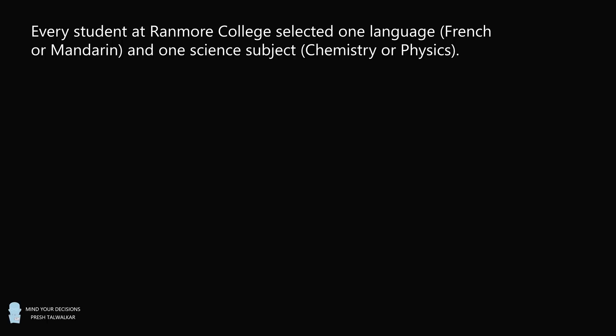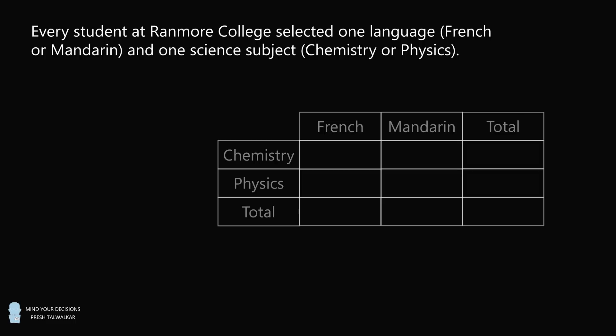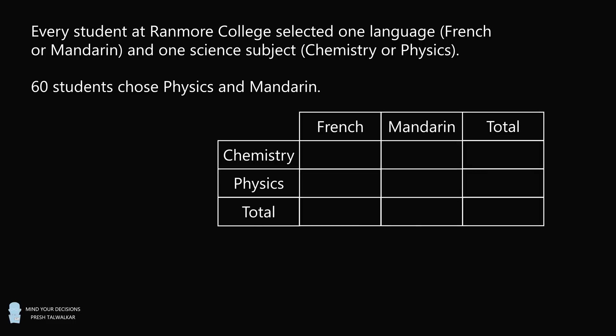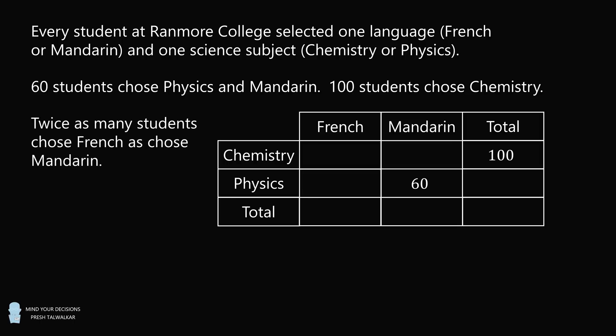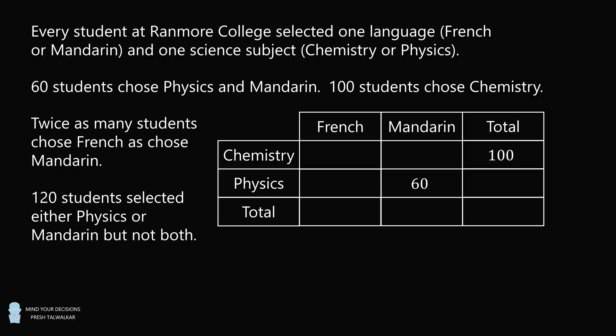Every student at Ranmore College selected one language, French or Mandarin, and one science subject, chemistry or physics. 60 students chose physics and Mandarin. 100 students chose chemistry. Twice as many students chose French as chose Mandarin. 120 students selected either physics or Mandarin, but not both. How many students are there at Ranmore College?